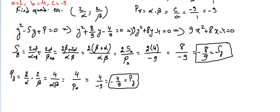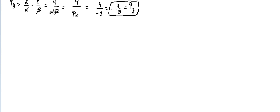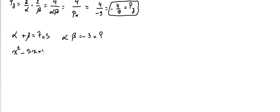Let's try one more example. Find alpha and beta such that alpha plus beta equals seven and alpha times beta equals minus three. Alpha plus beta is the sum and alpha times beta is the product, so we can form a quadratic equation x squared minus s times x plus p equals zero.